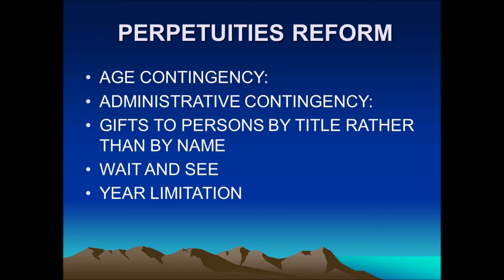Who can actually be used as measuring lives? Humans only — no animals, no organizations. Also, the number of measuring lives must be reasonable. For example, 'the conveyance will terminate 21 years after the death of the survivor of all persons listed in the New York County Telephone Directory' is clearly impermissible.